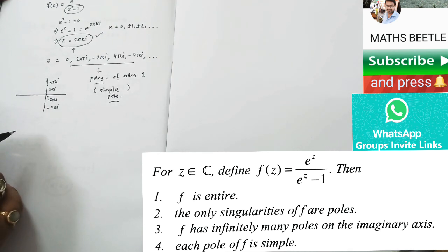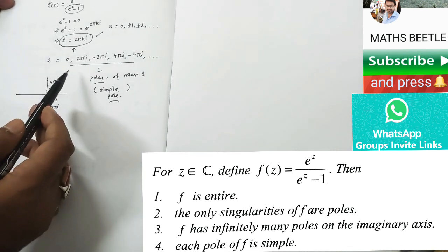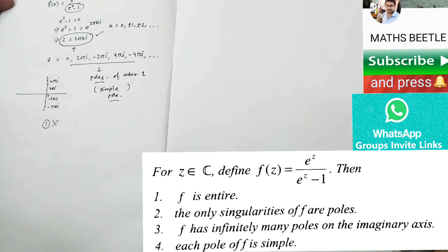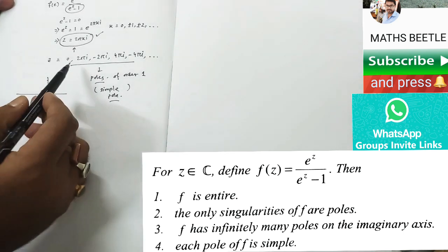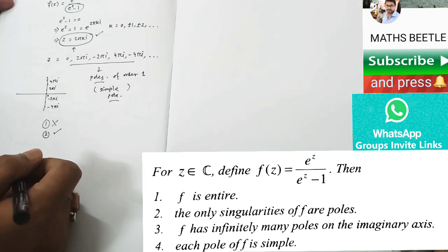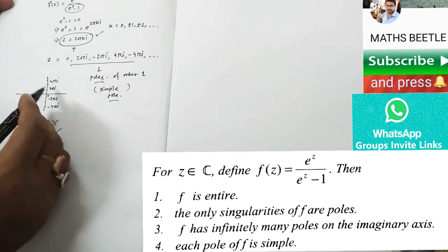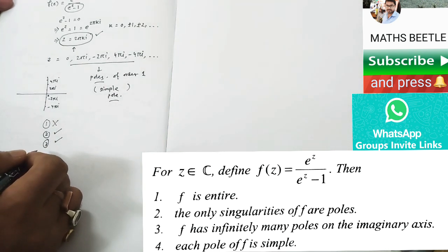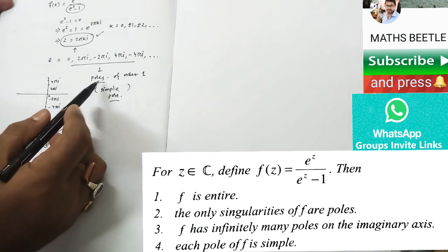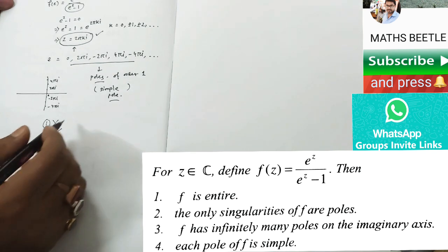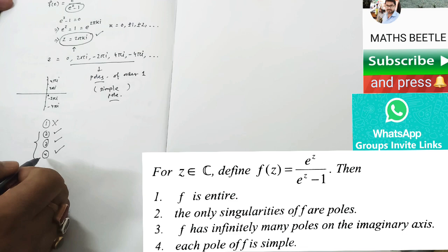Now checking the options: the first option says f is entire, but f clearly has singularities, so it is not entire — first option is false. The second option says the only singularities of f are poles — yes, all singularities are poles, so the second option is correct. The third option says f has infinitely many poles on the imaginary axis — exactly what we found, so the third option is also correct. The fourth option says each pole of f is simple — yes, all poles are of order one, so the fourth option is also correct. Therefore, options two, three, and four are all correct.